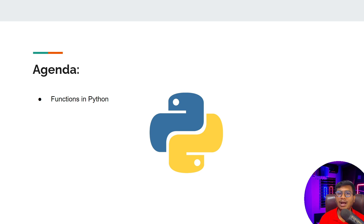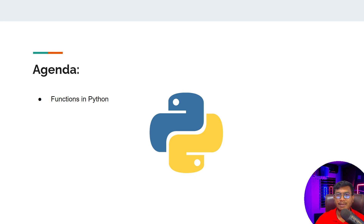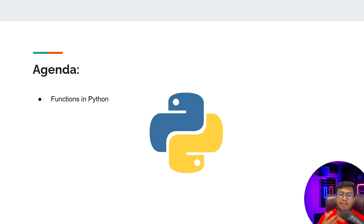Now it's time to learn the function concept in detail — how we can create our own custom function. If I want to create a function and use it multiple times in my code, I can do that. So far we have written code in a scripting style; now we'll be learning functional programming, because going forward when implementing advanced applications, scripting alone will not work. You have to write everything as a function.